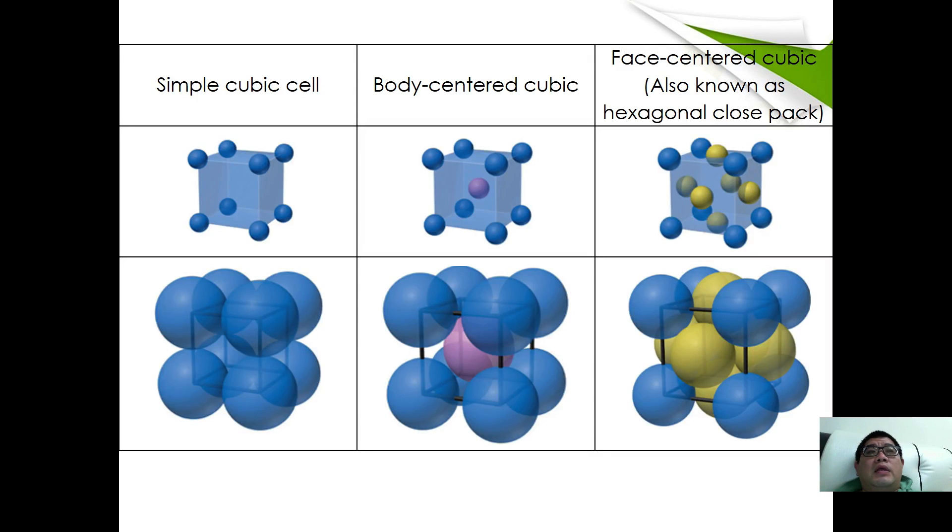We also have what we call multi-primitive cells, which are made of simple cubic cell, body-centered cubic, and face-centered cubic. This is a 3-dimensional arrangement of a simple cubic cell, body-centered cubic, and hexagonal close pack. A simple cubic cell is made from 8 corners, whereas a body-centered cubic is made of 8 corners plus 1 particle at the center of the cubic, and face-centered cubic where each of the faces has 1 particle.